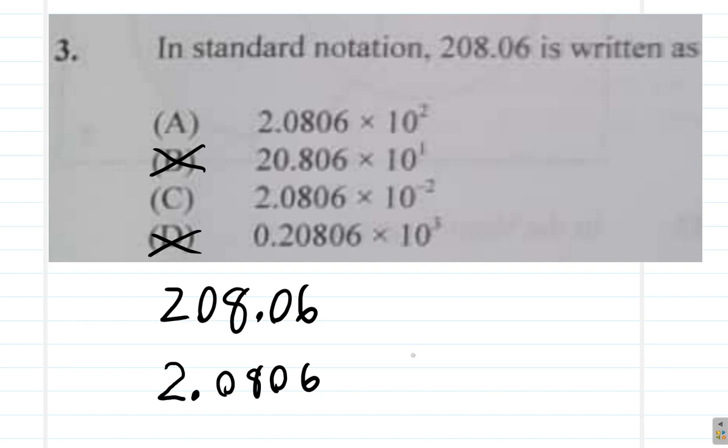Now, we have only A and C left to deal with. Here, you must multiply by a number, so that 2.0806, when multiplied by that number, will become 208.06. Which number do you multiply by?